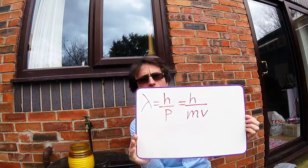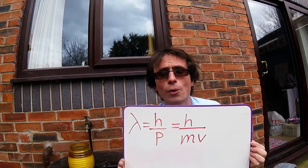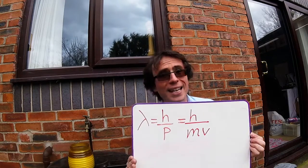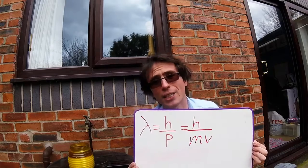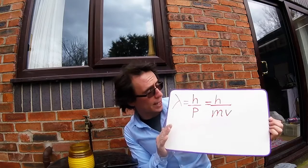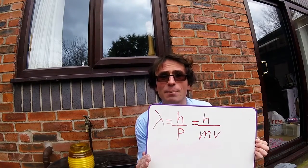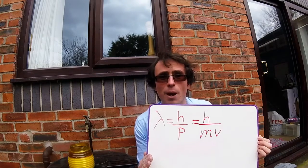So, what Louis de Broglie suggested was that all matter has wave-like properties as well. Here's the equation which he developed, and this is known as de Broglie's wavelength. This equation is given in your formula booklet. We can see that the wavelength, lambda, is equal to h, Planck's constant, divided by the momentum of the particle.